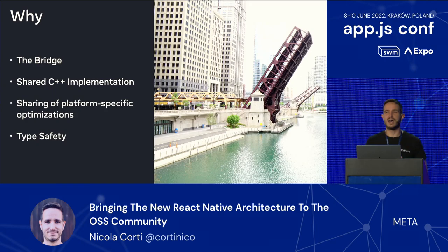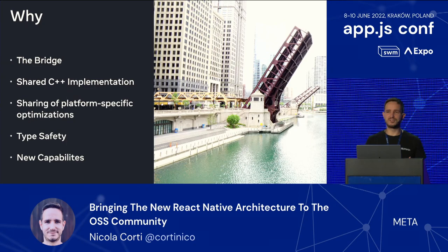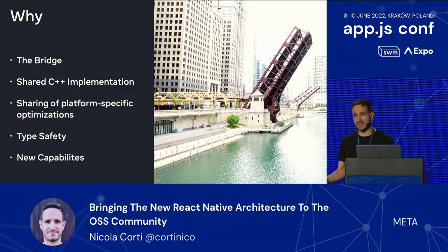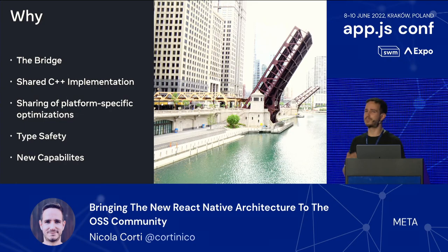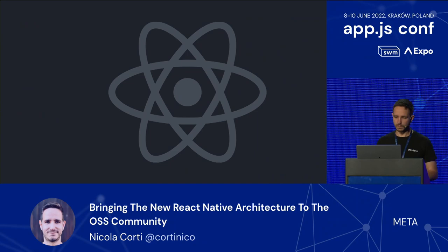Moreover, we looked at the developer experience internally at Meta, and we believe one thing that was missing in the old architecture was type safety. That's why we built a component called the Codegen, which allows us to bring type safety into the formula. There are also a lot of new capabilities — some are not public yet, but you might find them in the Git history of React Native. And if you're aware of React 18, a lot of the new features of React 18 run only on the new architecture, and I will talk more about it later in the talk.